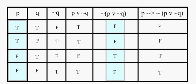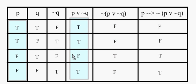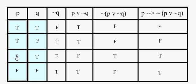Now we have completely determined the truth table for this statement. When p and q are both true, the statement is false. If p is true but q is false, the final statement is also false. If p is false and q is true, the final statement is true. And if p and q are both false, the final statement is true. We've determined in each of the four possible combinations of inputs what the final output will be. The rest of this is just intermediate work — some of it you could do in your head, but writing it all out is akin to showing all of your work.